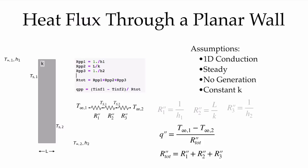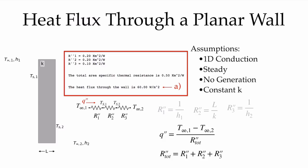We can easily implement these equations directly in our Jupyter notebook, calculating these R double primes, the total resistance being the sum of them, and the heat flux being the difference in temperature divided by the total resistance. If we do that, we directly solve for part A of the problem. The sum of the three resistances is 0.2 plus 0.2 plus 0.1, which equals 0.5, and the heat flux passing through our wall is 60 W/m².